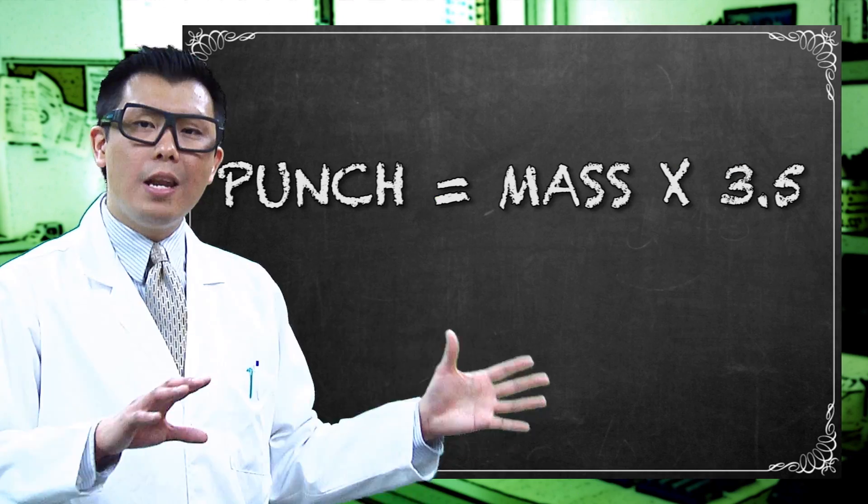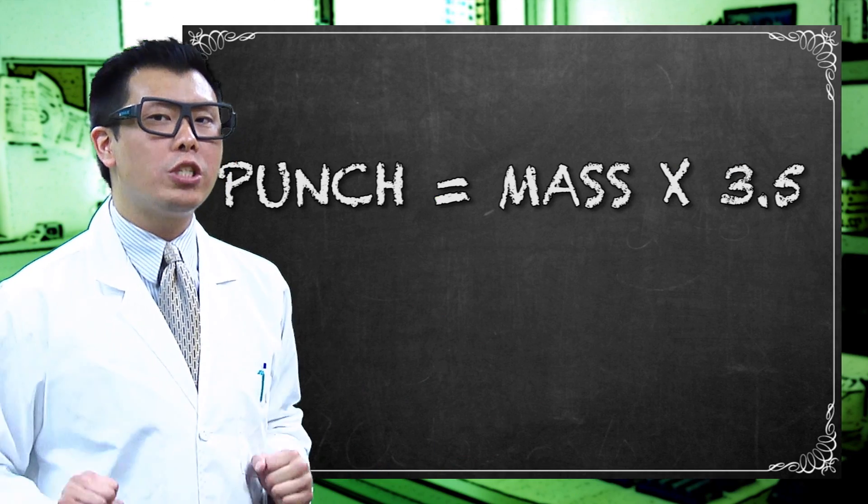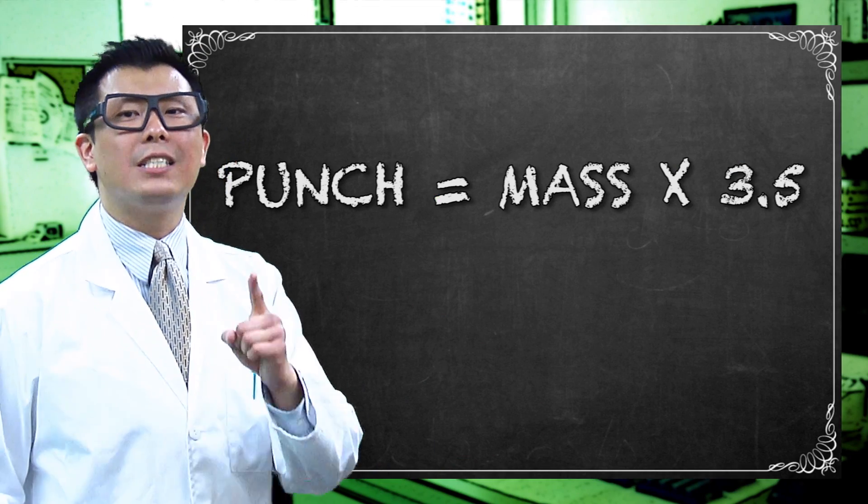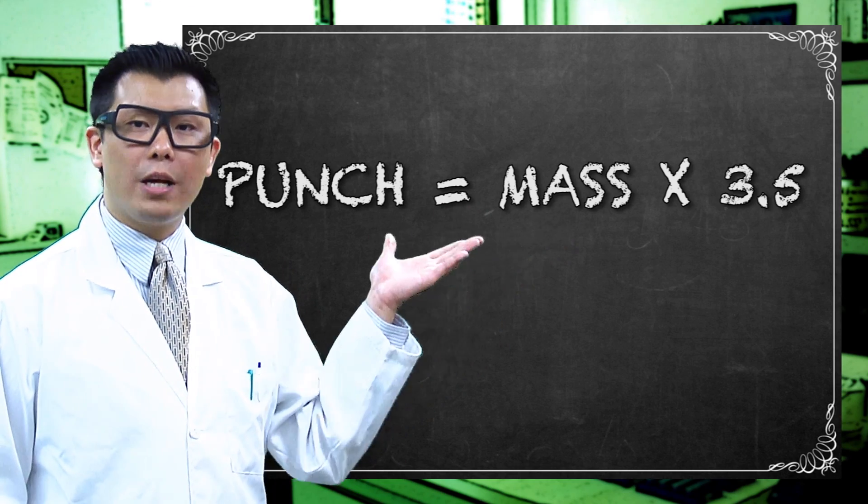And to measure such force, we will be using the unit of measure known as the Newton, named after Sir Isaac Newton. Now, an amateur boxer uses approximately 2,500 newtons in one punch. Now, this totally lines up with the formula that a person's punch exerts just about as much force as their body mass does, multiplied by 3.5.